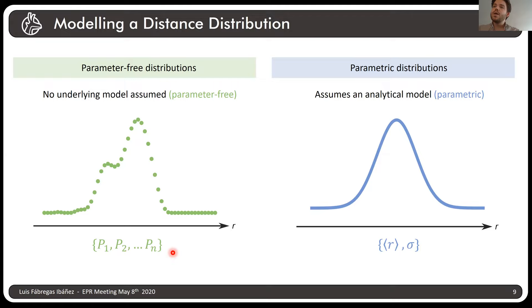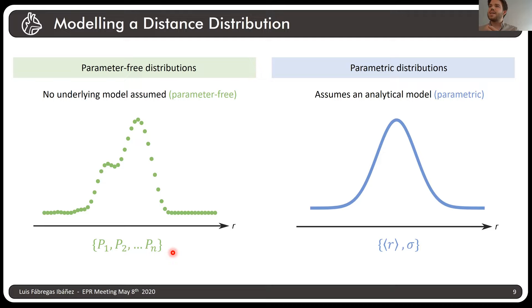Parametric distributions can suffer from selection bias: as soon as you say 'my distribution is a Gaussian,' you are selecting one of many possible models that could describe the ground truth. There is also confirmation bias — you assume the data should look like a Gaussian, you fit a Gaussian, it fits well, and you think 'this is what I expect.' This kind of confirmation bias can be dangerous when using parametric distributions. Ideally, we would prefer to use parameter-free distributions because there are no assumptions about them and they really give us the best estimation of what the actual ground truth is.